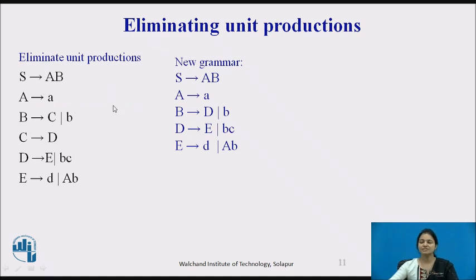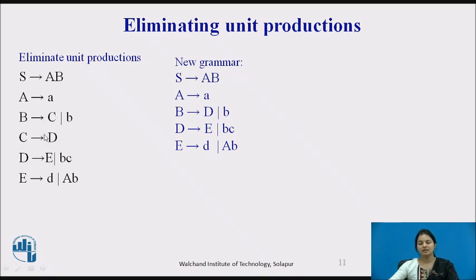Now we will see how to eliminate unit productions. In this grammar, unit productions are present: B is producing C, C is producing D, and D is having some terminal value, but C is not having any terminal values — it is a single production. So directly we can substitute D in place of C. The newly formed grammar will be: S producing AB, A producing A, B producing D, and D producing its terminal value directly, thereby eliminating the unit productions.